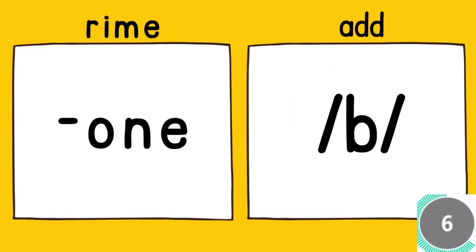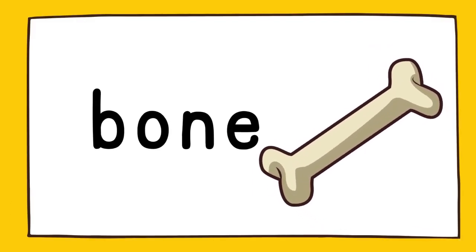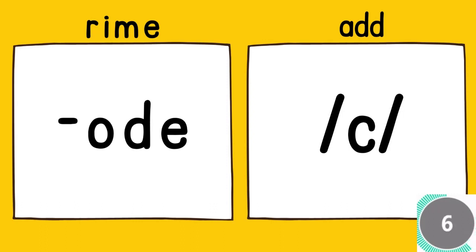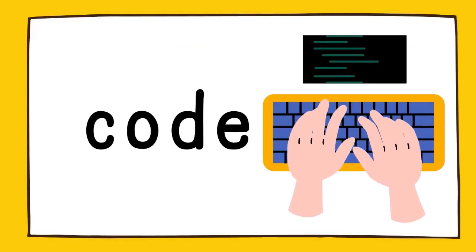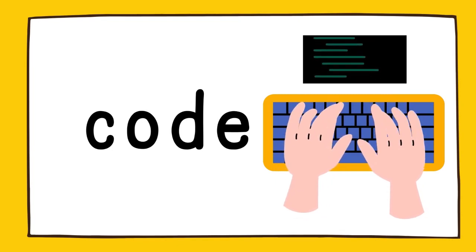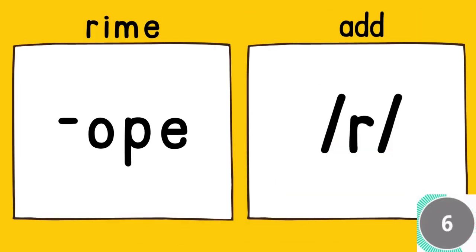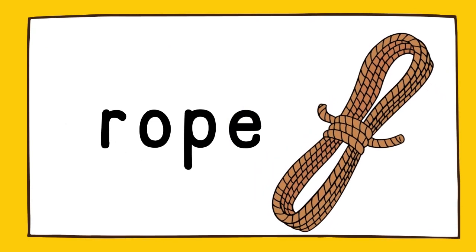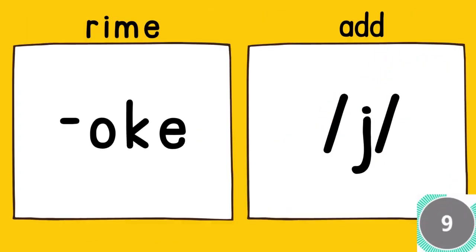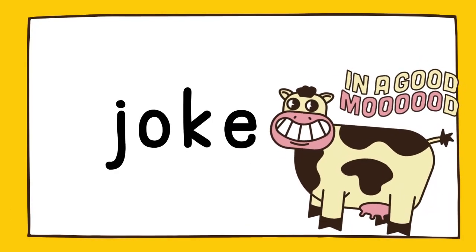The rhyme is own, add b. Bone. The rhyme is ode, add c. Code. The rhyme is op, add r. Rope. The rhyme is oak, add j. Joke.